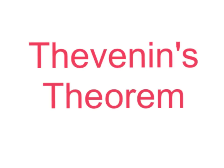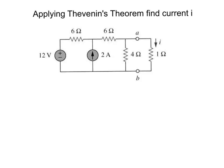Let's talk about Thevenin's Theorem and how to use it in circuit analysis. In this example, we need to apply Thevenin's Theorem to find current I, which is the current through the 1 ohm resistor. That resistor is also known as the load resistor, so we can call it our load.